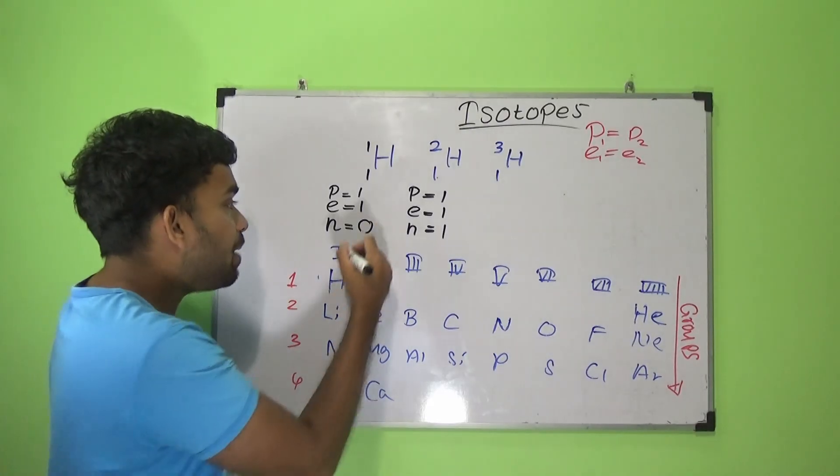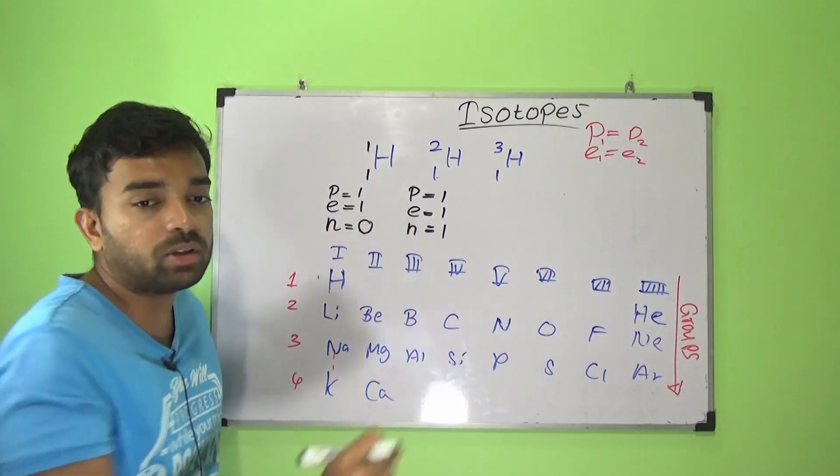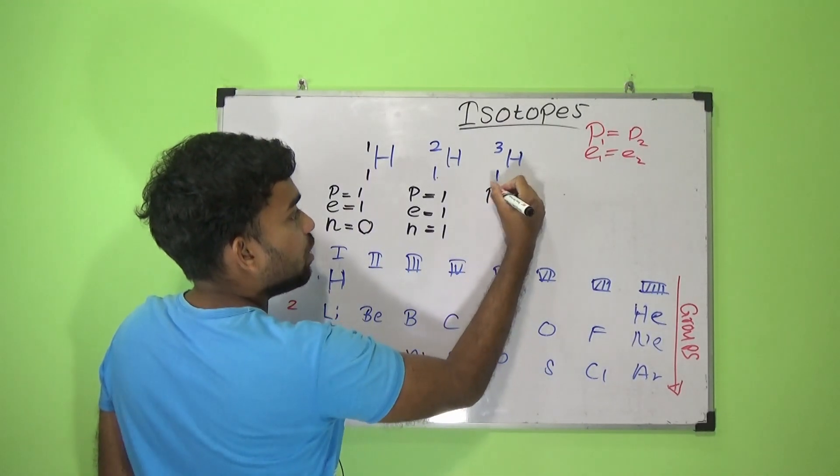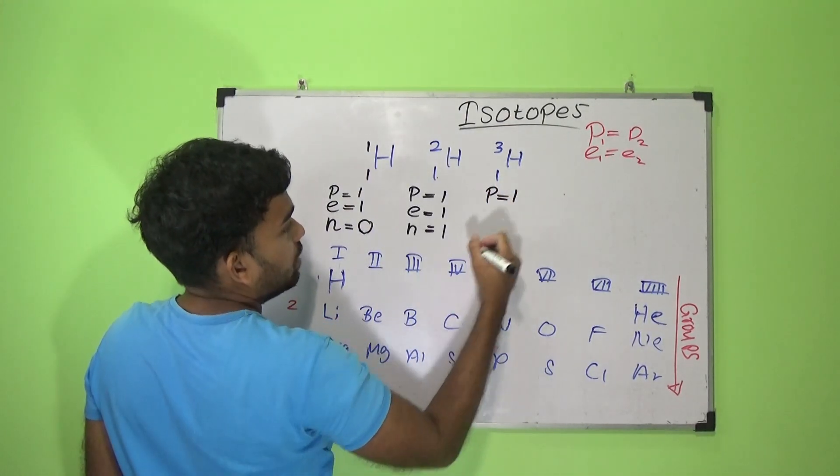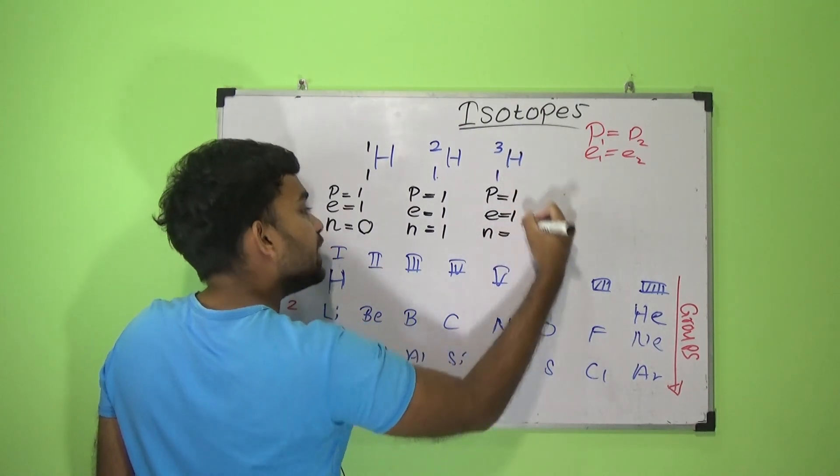Number of electrons again equals to 1. Number of neutrons is 3 minus 1, which is 2.